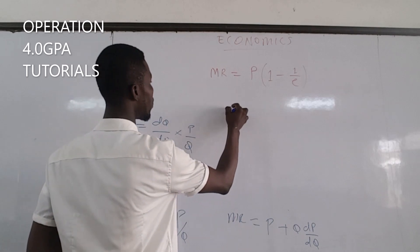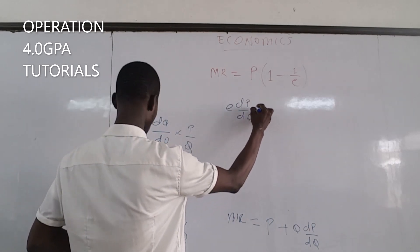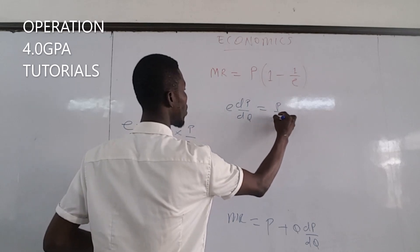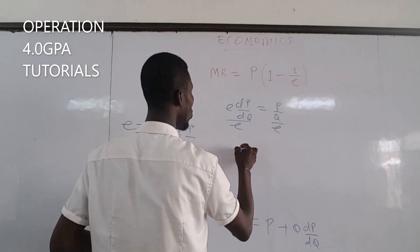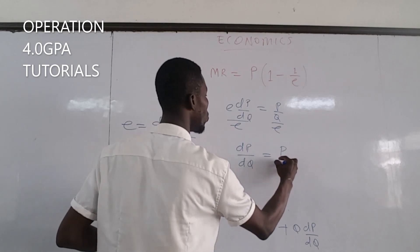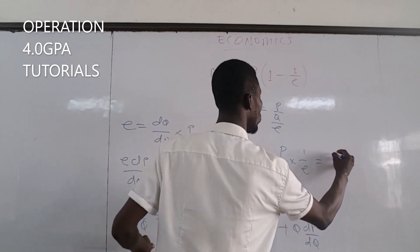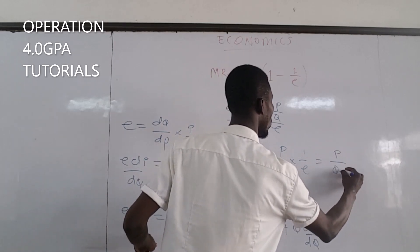So we have E equals dP over dQ being equal to P over Q. Dividing through by the elasticity, we have change in P over change in Q equals P over Q times 1 over E, which will be equal to P over QE.